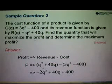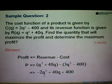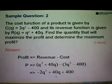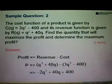So when we simplify, q square minus 3q square will give us negative 2q square. And 40q, we don't have q here so we will copy 40q. And then negative times negative 400 will give us positive 400. So now we have the function of P.